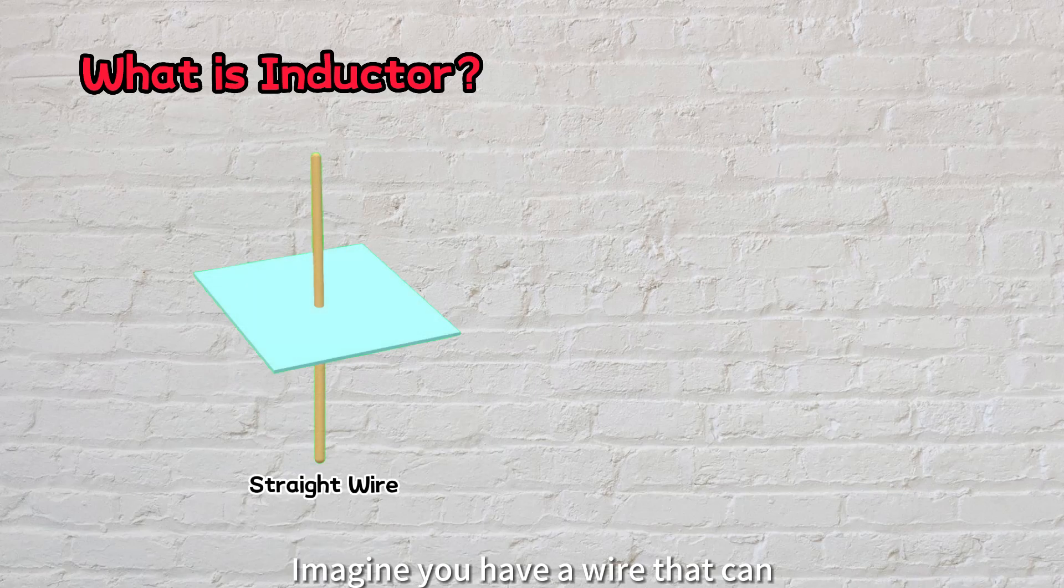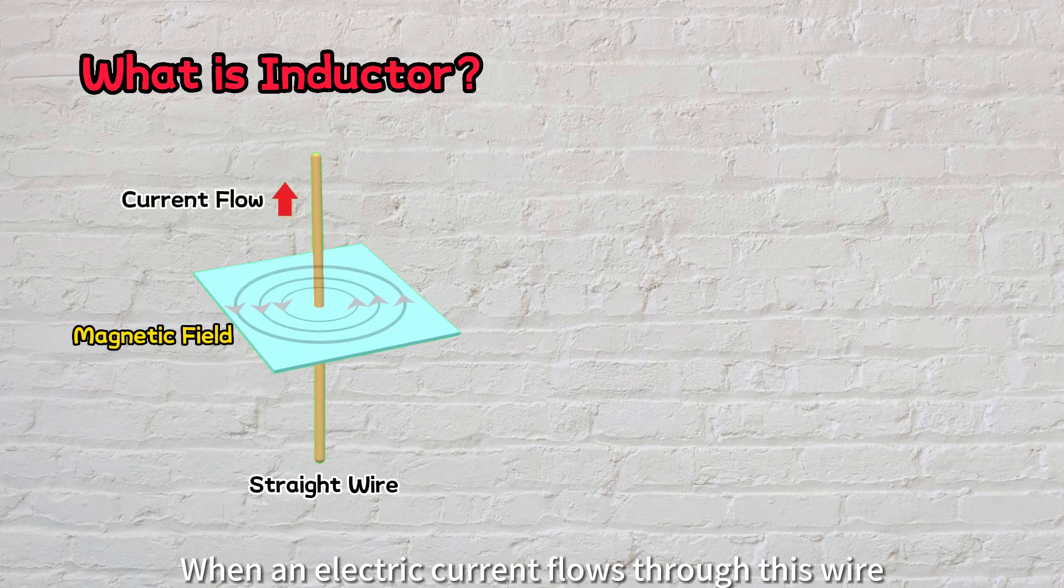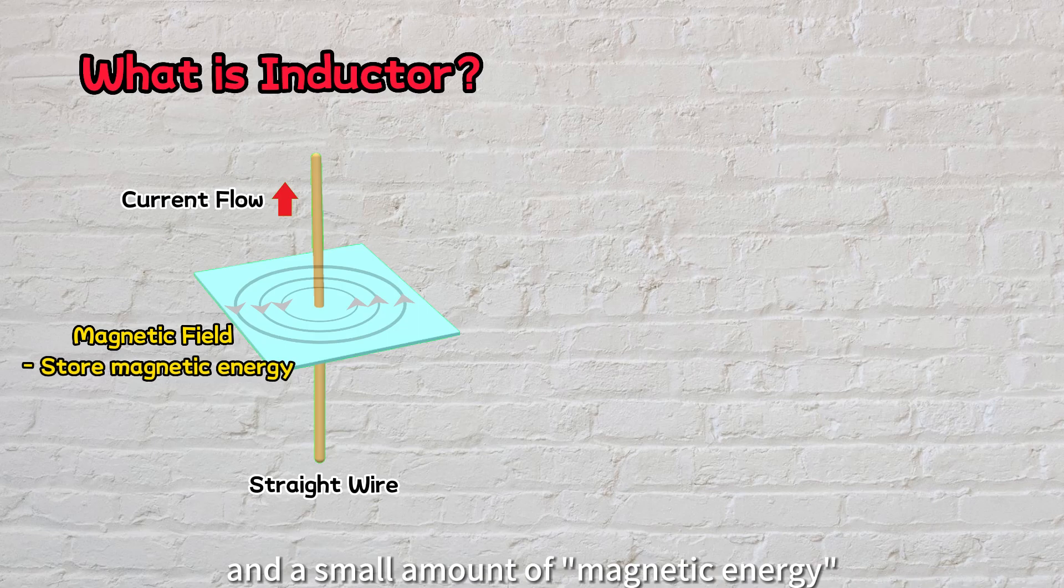Imagine you have a wire that can store energy in a very special way. When an electric current flows through this wire, it creates something amazing called a magnetic field, and a small amount of magnetic energy is temporarily stored in this field.